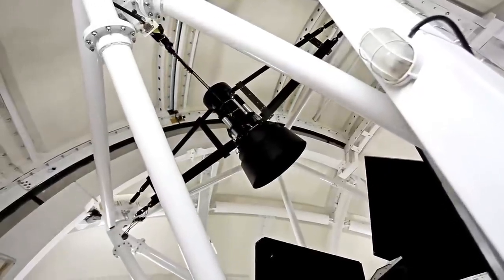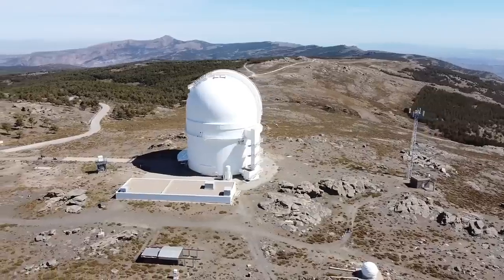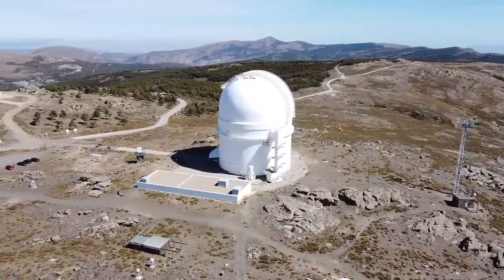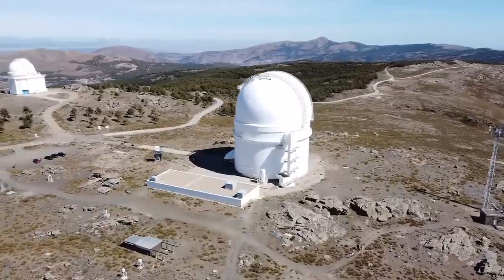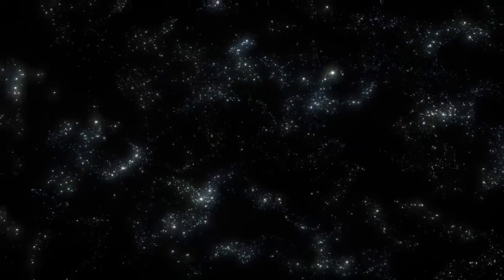This red supergiant, situated in the Orion constellation, has historically been among the brightest objects in the night sky, drawing the curiosity of both professional astronomers and stargazers alike. Yet it is Betelgeuse's recent erratic behavior that has sparked a surge of scientific interest.